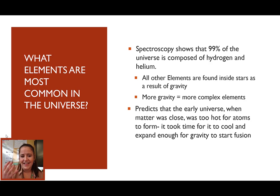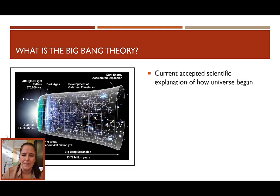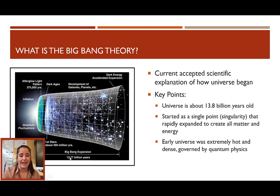But that is another one of the main pieces of evidence for the Big Bang theory, which is the current accepted explanation of how the universe began. This little graphic describes it, but its basic tenets are that the universe is about 13.8 billion years old. It started as a single point, which we call the singularity, that rapidly expanded to create all of the matter and energy and space and time and everything. And the early universe was really, really hot. It was nothing like the world that we are used to today. It was hot and dense and consisted of particles like quarks and photons and neutrinos popping in and out of existence, governed by quantum physics. It wasn't even until about 400 million years later that we even got stars starting to be developed. So, that's the Big Bang theory.